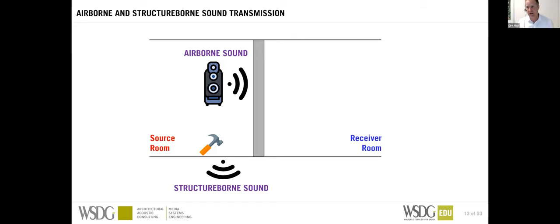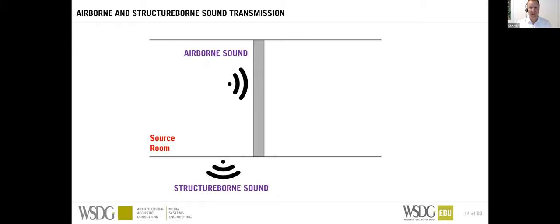The really concerning thing about airborne and structure-borne sound is that they convert into each other. Airborne sound can travel through a wall, be transferred to structure-borne sound, and be transferred back to airborne sound again. If you put that machine on a floor above you, you'll actually hear airborne sound being projected from the ceiling above you.